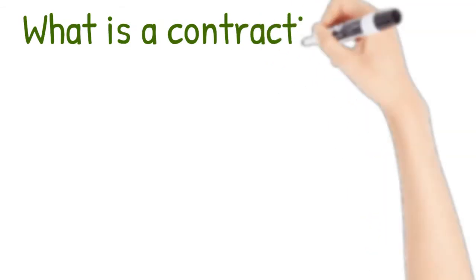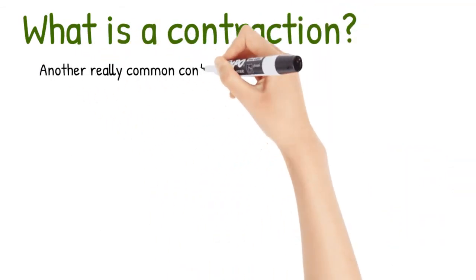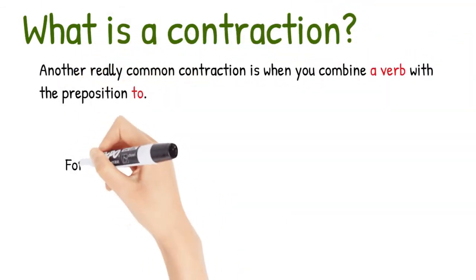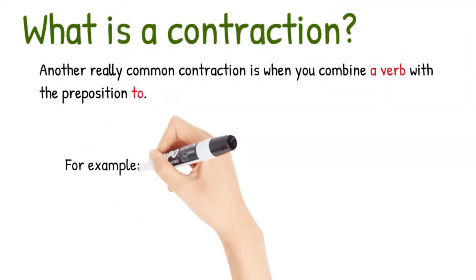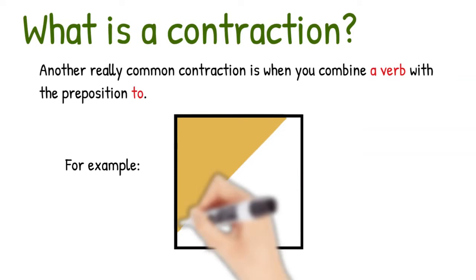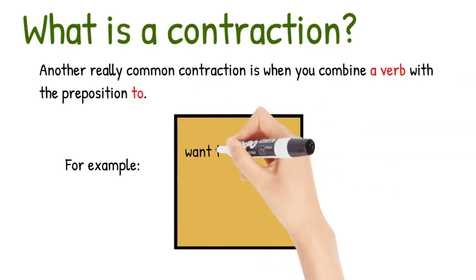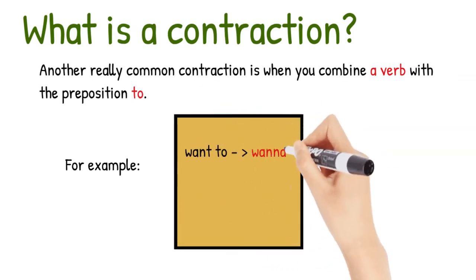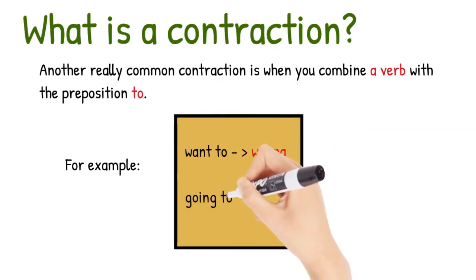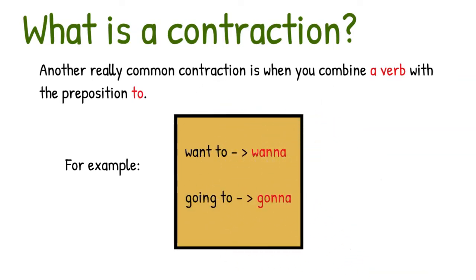Another common type of contraction is when you combine a verb with the preposition to. For example, want to becomes wanna, and going to becomes gonna. Wanna, gonna. Do you wanna? Are you gonna?